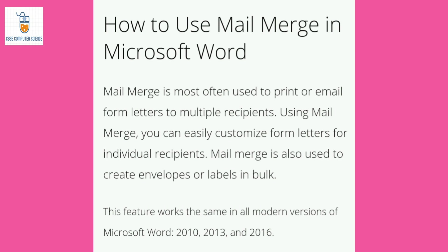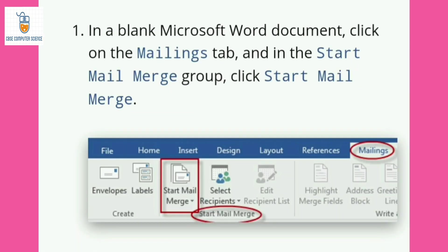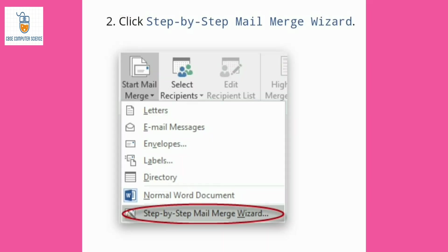Mail merge is most often used to print or email form letters to multiple recipients. In a blank Microsoft Word document, click on the Mailings tab and in the Start Mail Merge group, click the Start Mail Merge option. Then click on Step by Step Mail Merge Wizard, which is given at the bottom of the Start Mail Merge drop-down list.